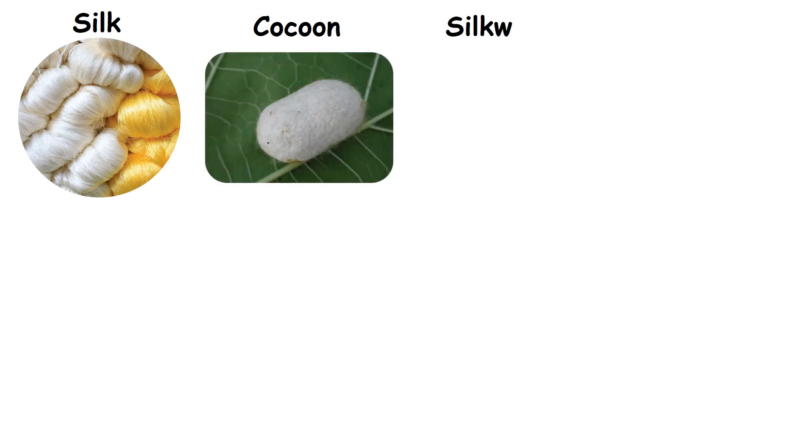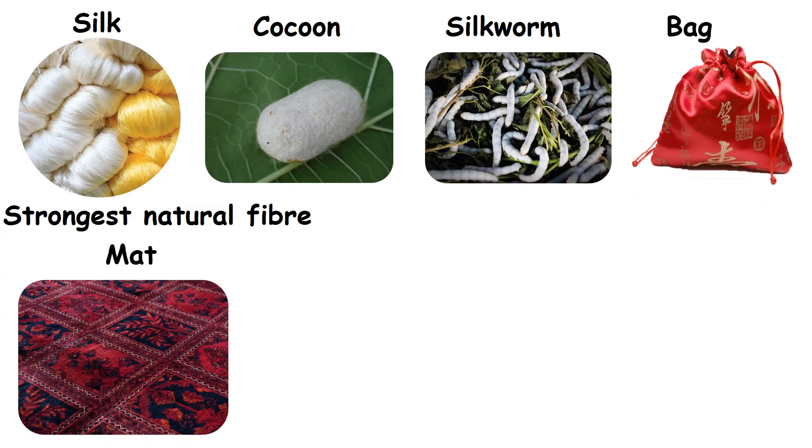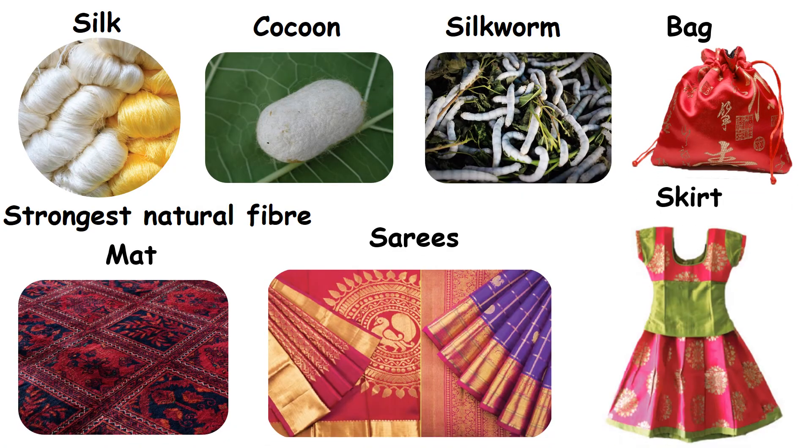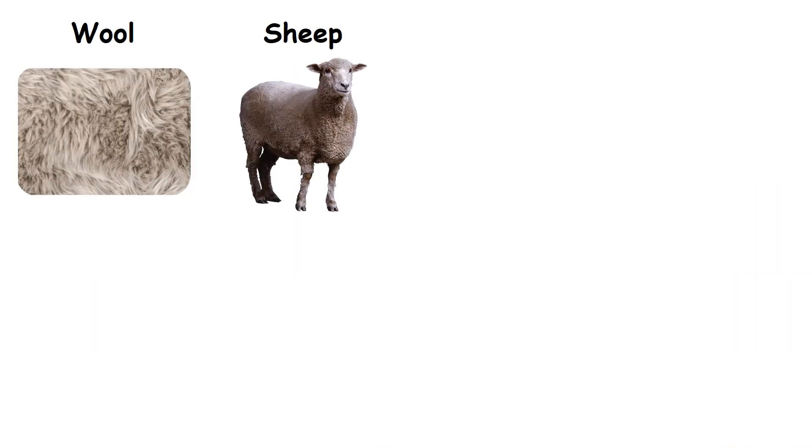Silk. It is obtained from cocoon of silkworm. It is the strongest natural fiber. We make many things like belts, mats, saris and skirts from silk. Silk thread is a strong material, so it is used in making parachutes.